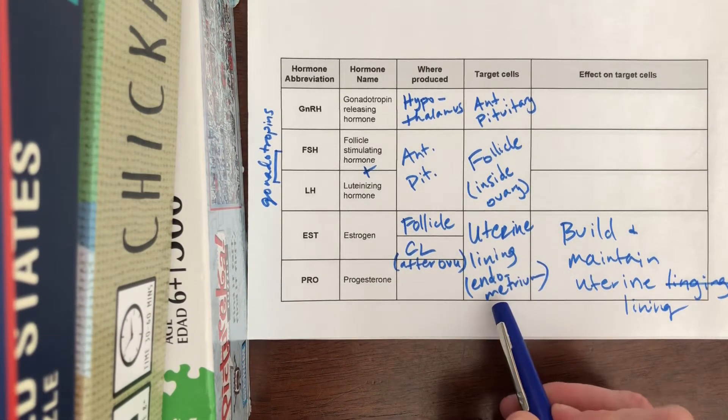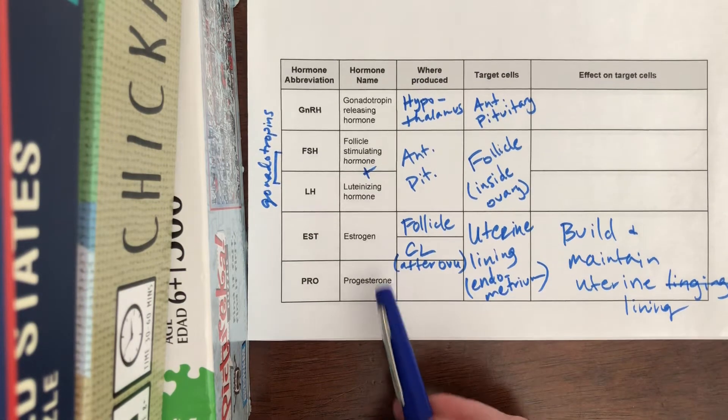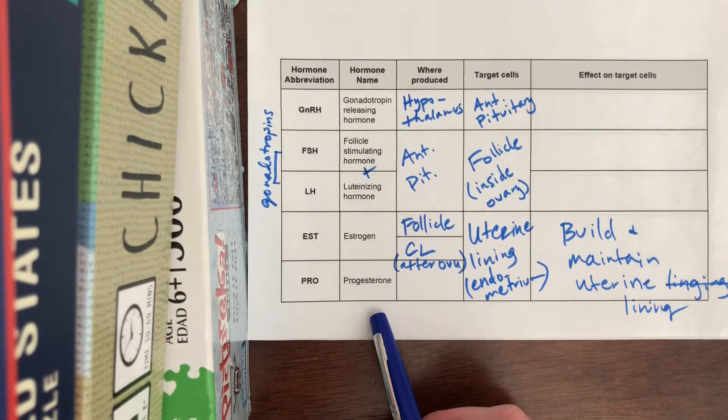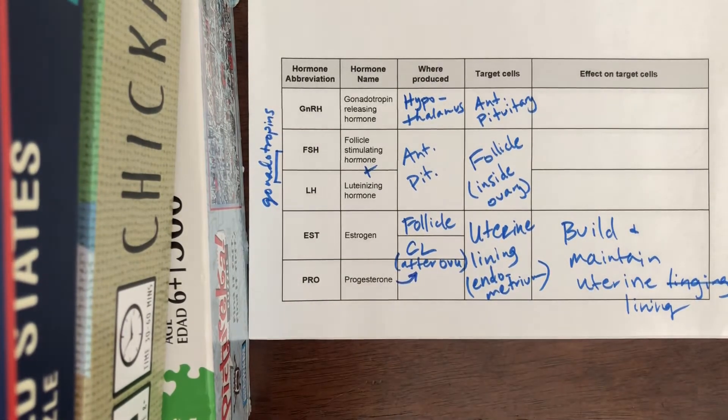Alright, so the uterine lining, otherwise known as the endometrium, gets built up by estrogen and progesterone. However, progesterone is not produced until after ovulation.